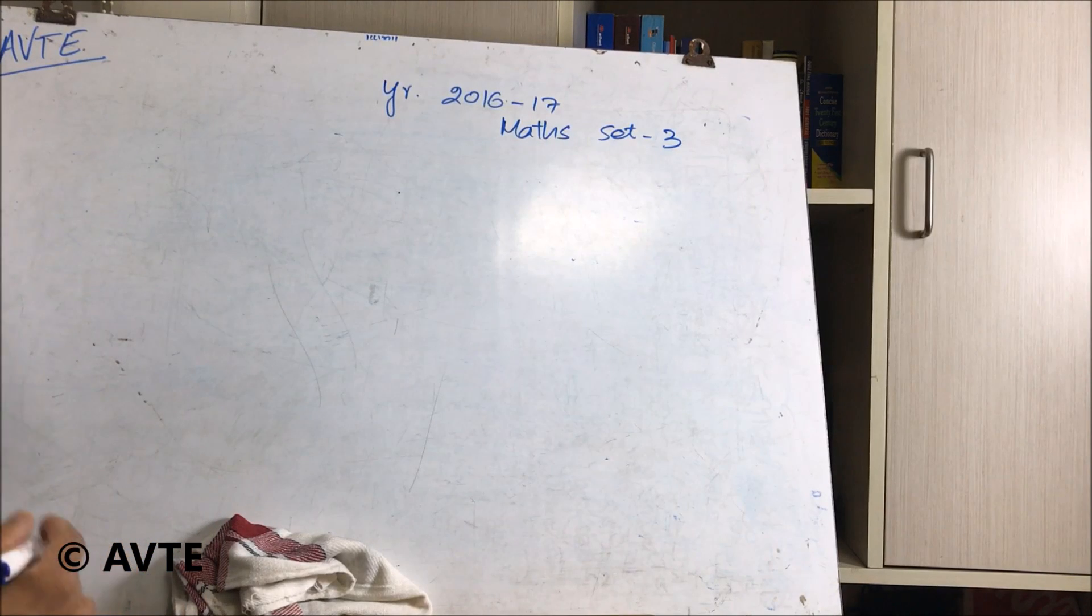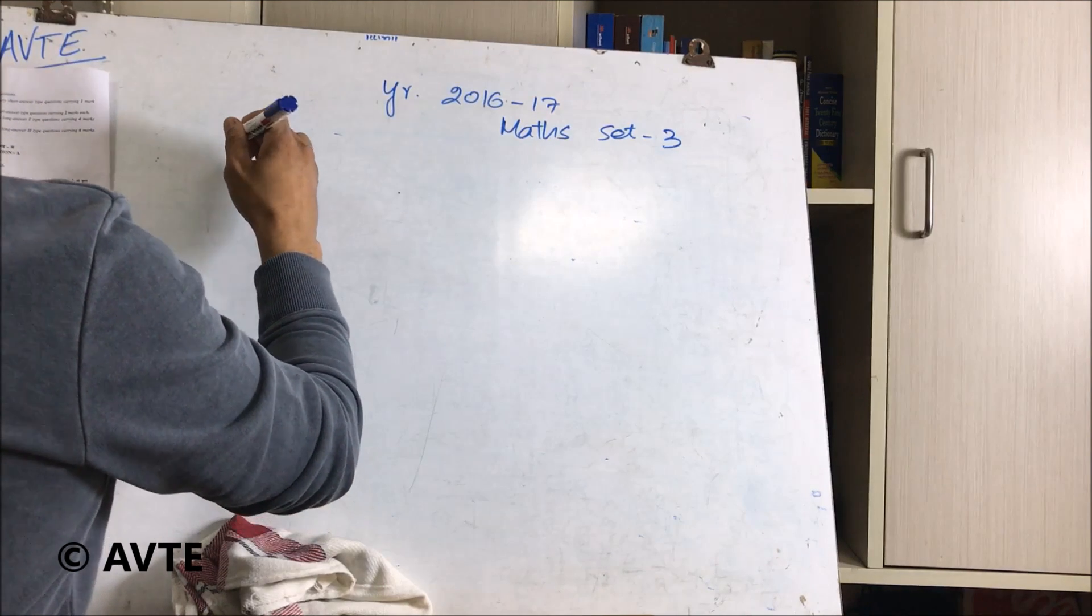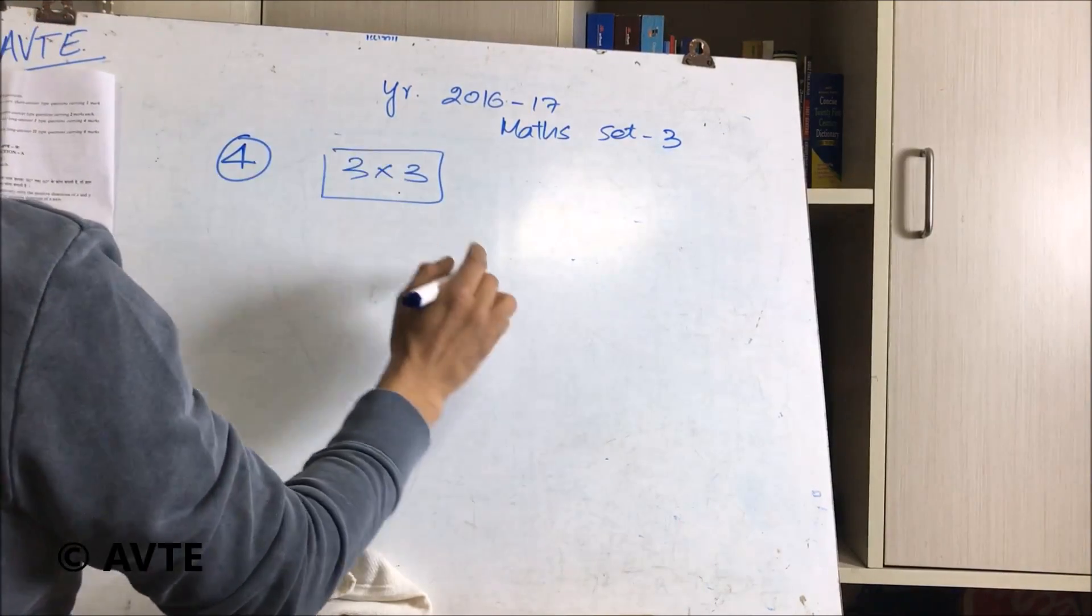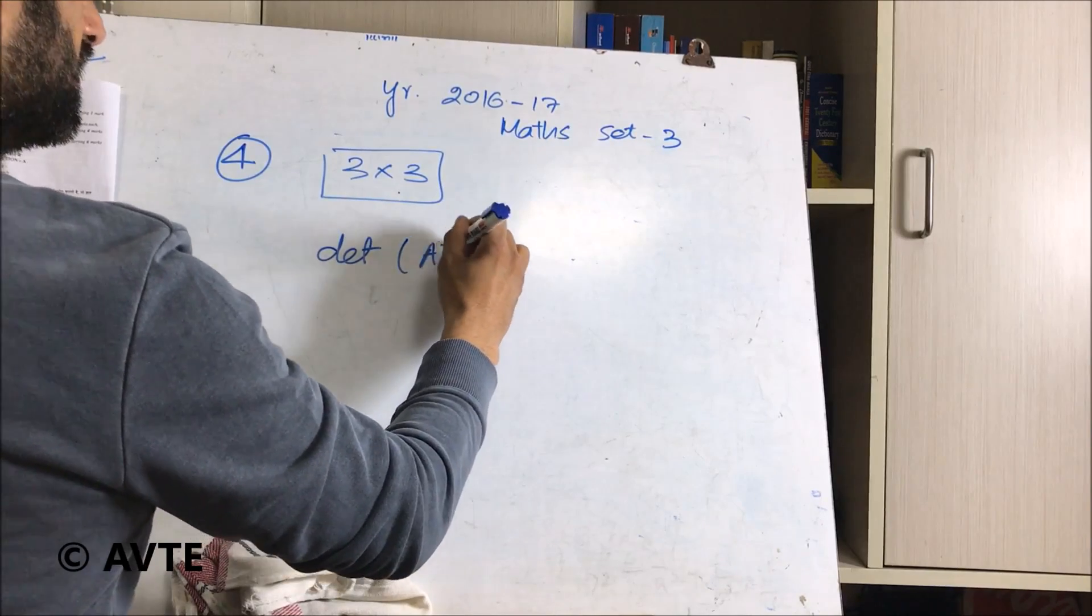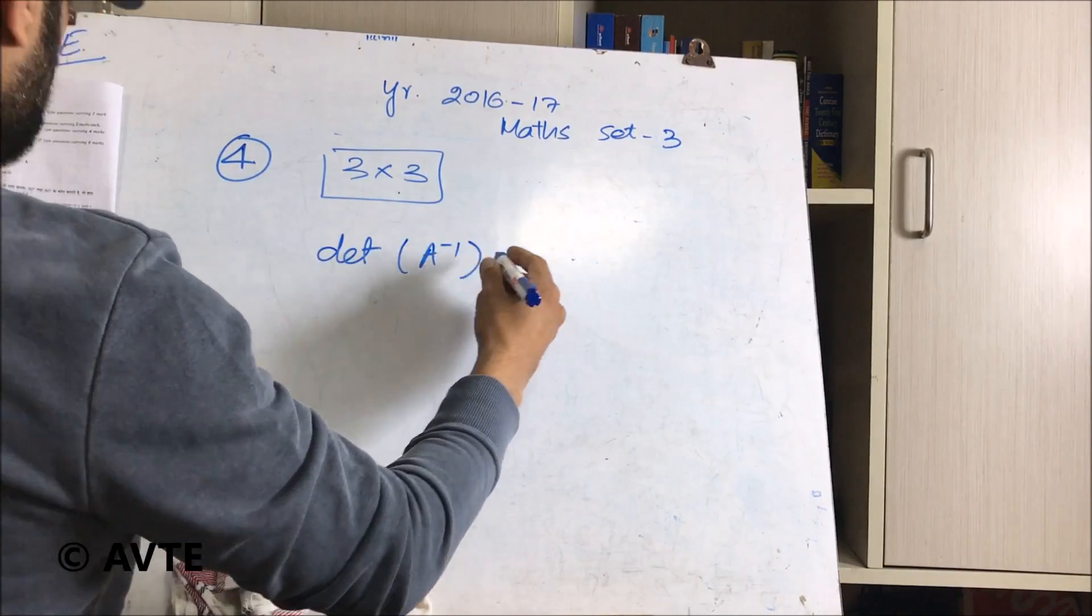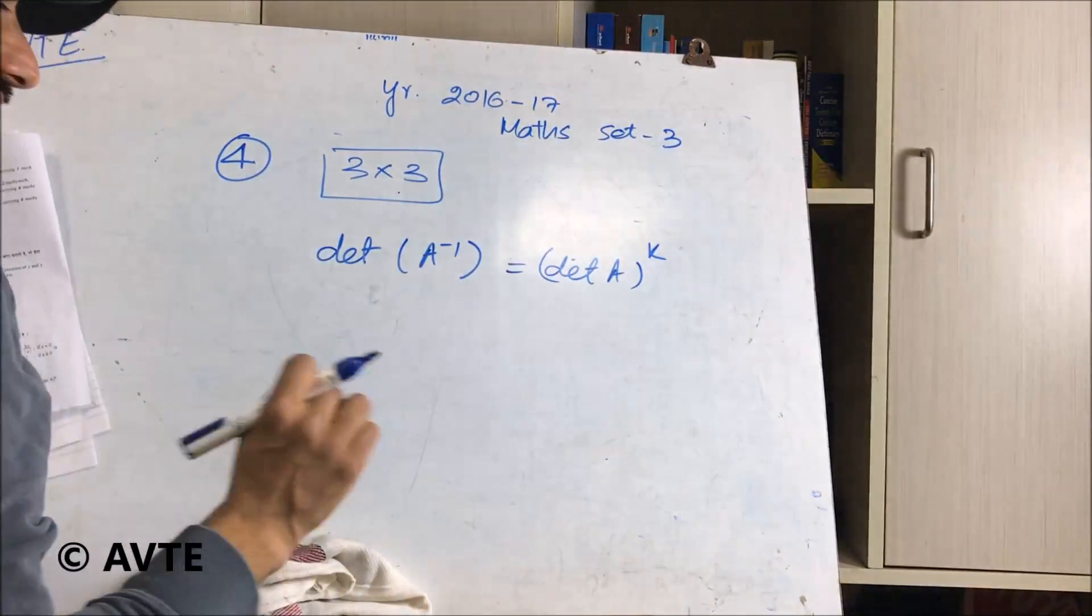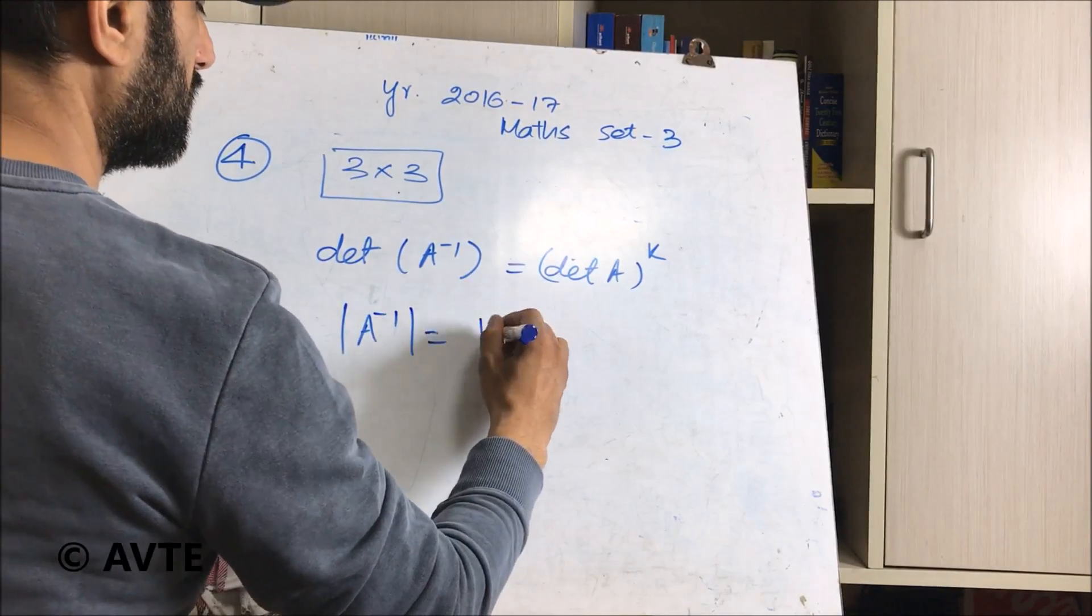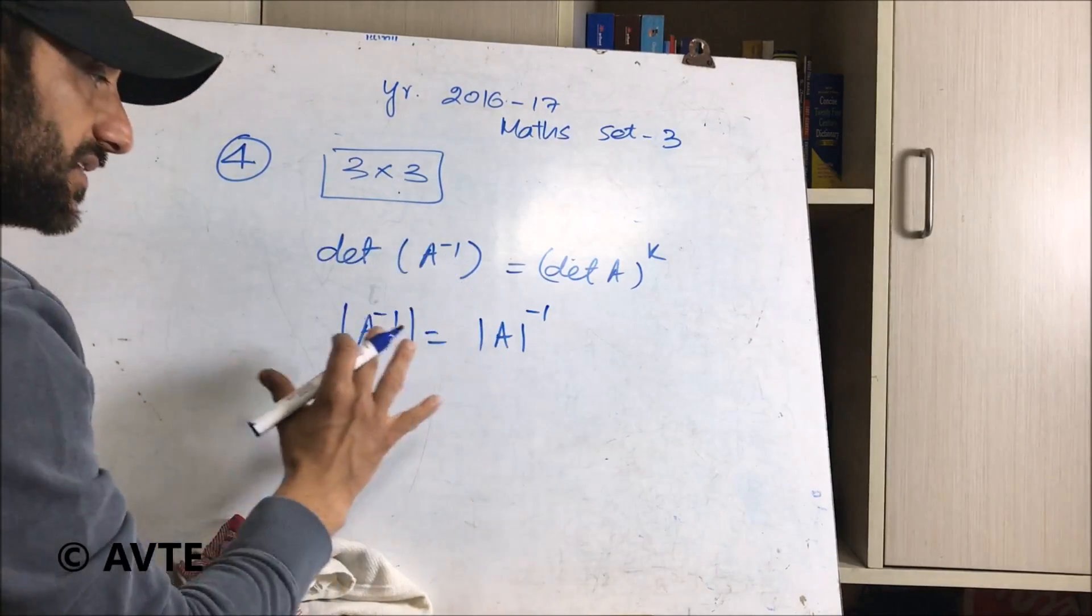Coming on to the solution of fourth question. The matrix is 3 cross 3, a square matrix of order 3, and they want us to find the value of k when determinant of A inverse is equal to determinant of A raised to power k. Everyone knows that determinant of A inverse is equal to determinant A whole inverse, irrespective of the order.